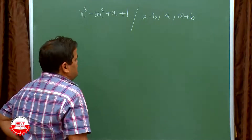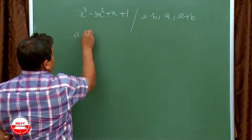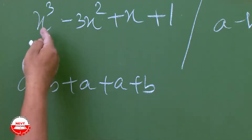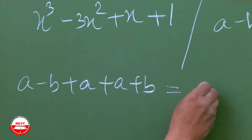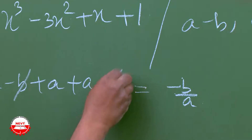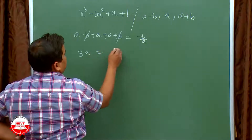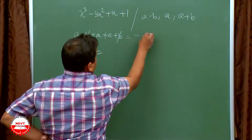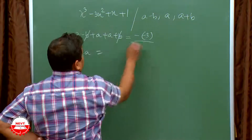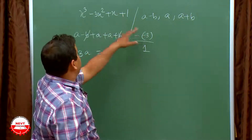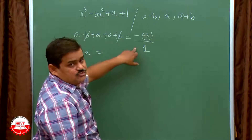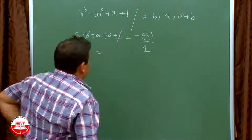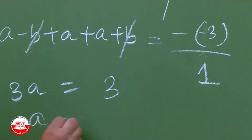Sum of zeros: (a minus b) plus a plus (a plus b). Here the coefficient of x cubed is 1. This equals minus b by a, meaning 3a equals 3 divided by 1. So a is equal to 1. Do not write minus b by a using the variable a since a appears in the zeros too — write coefficient of x squared by coefficient of x cubed directly.